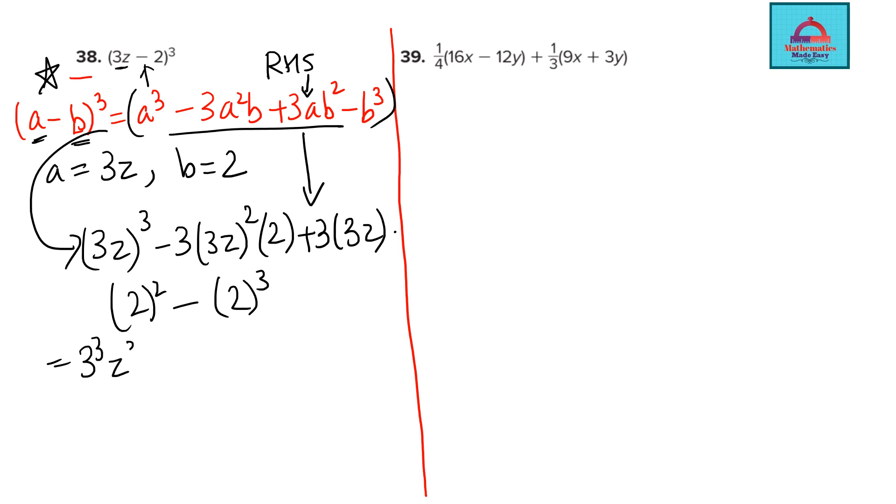So this is 3³z³ minus 3 times. So multiply this. So 3² is 9z² with 2 plus this is 3×9z with 4 and this is minus 8. So the final answer, when you simplify this comes out to be 27z³ minus 9 multiplied with 6, that is 54z². 9 multiplied with 4, that is 36z minus 8. So this is your final answer.